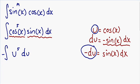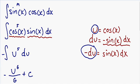Now we have a fairly simple integral: the integral of u to the 5th. To integrate, we add 1 to the exponent, so u to the 5th becomes u to the 6th, and we divide by that same number, 6. So we get negative u to the 6th over 6, and we can't forget our constant plus C.